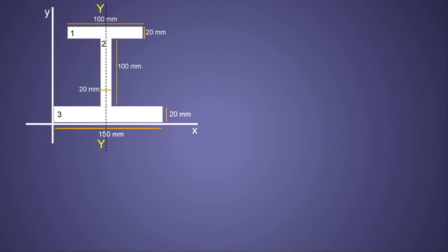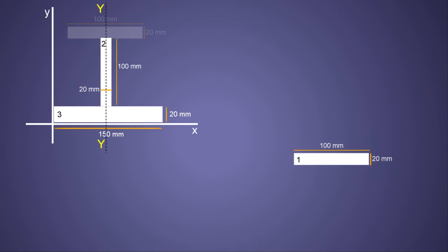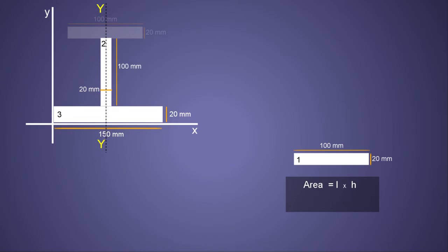In step three, the actual calculation starts — we find the area of each simple shape. Rectangle 1 has a length of 100 mm and a height of 20 mm. The area is length times height: 100 × 20 = 2000 mm².